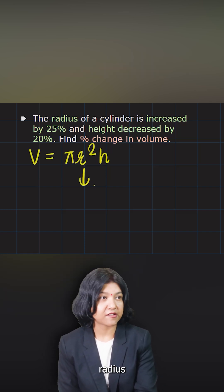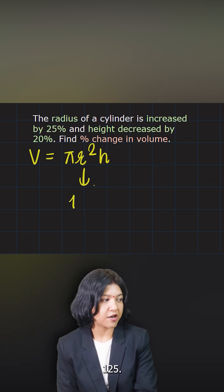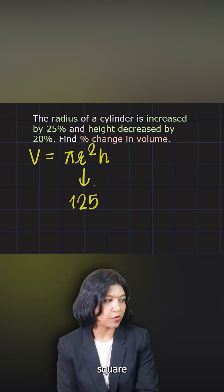So because your radius here is increased by 25 percent, it is 125, but you have to square it.